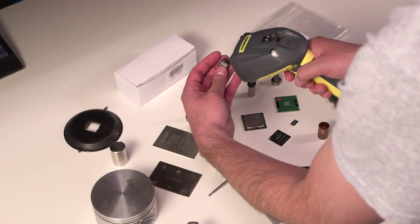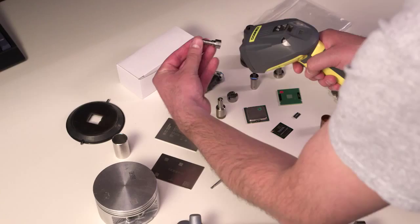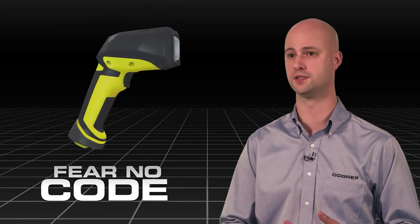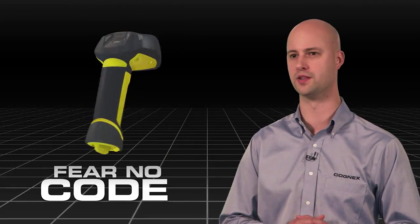For example, in the automotive industry, we see a wide variety of surfaces: cast surfaces, machine surfaces, curved surfaces, highly polished or reflective surfaces, and these all have direct part mark codes on them. Of course, the 8600 is able to read those.